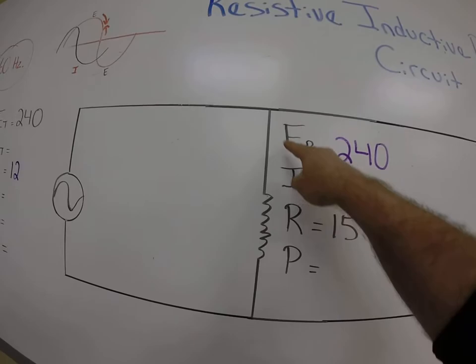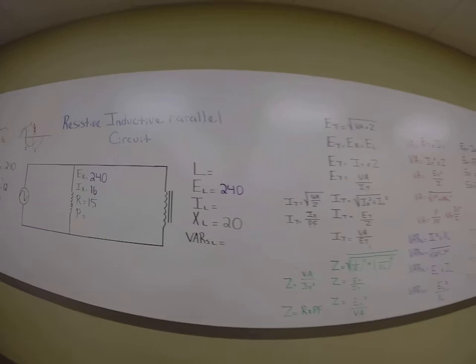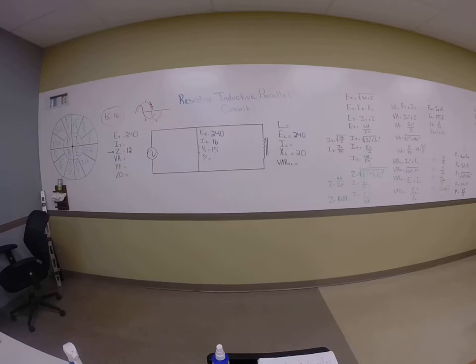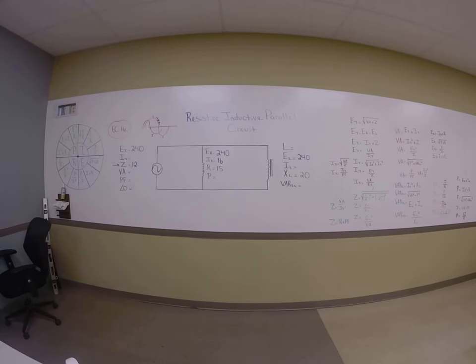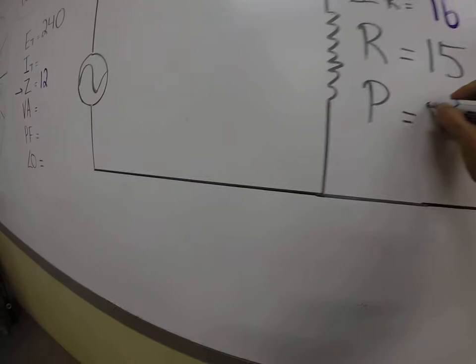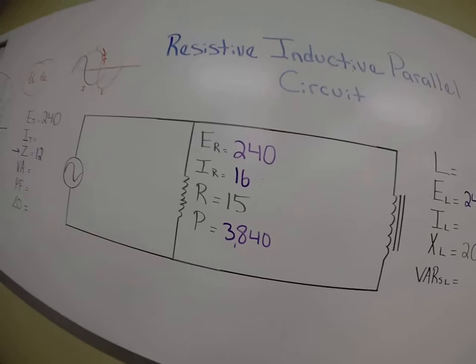Let's solve for P. Normally, when we're solving for P, we do volts times amps, right? Isn't that what we do all the time? Volts times amps. So, what's our volts? Our volts in this case is 240 times 16 equals 3,840 watts. That's columns done.